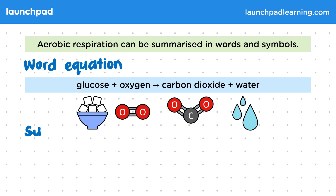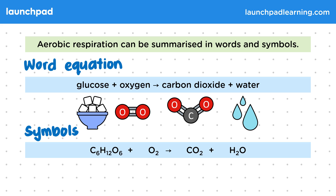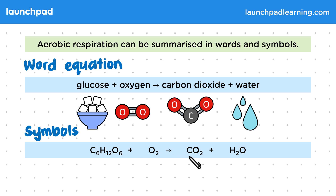Now let's have a look at the symbol equation. Here you can see the symbols for the reaction. Glucose is C6H12O6, plus oxygen, which is O2, gives carbon dioxide, CO2, and water, H2O. For the exam you need to be able to recognize these chemical symbols.